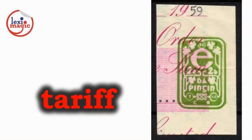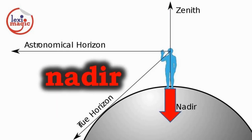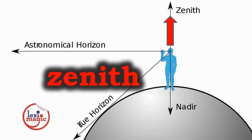Tariff refers to charges levied on exports and imports. Nadir is the lowest point of something. Zenith is the highest point of something.